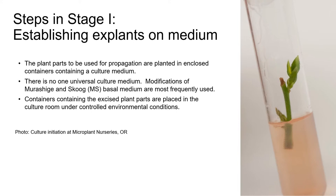After being surface sterilized, the plant parts are placed in test tubes or jars on a culture medium appropriate for that particular species or cultivar. There's no universal culture medium that works for all plants, but modifications of the Murashige and Skoog (MS) basal medium are used most often. The containers with the explants are then placed in the culture room where environmental conditions are precisely controlled. In the photo, you can see a small stem cutting of lilac that has just been stuck for initiation at Micro Plant Nurseries in Gervais, Oregon. The procedure looks very similar to conventional stem cuttings, just on a much smaller scale.